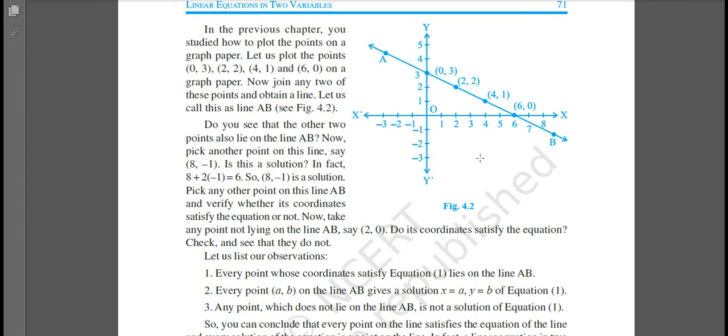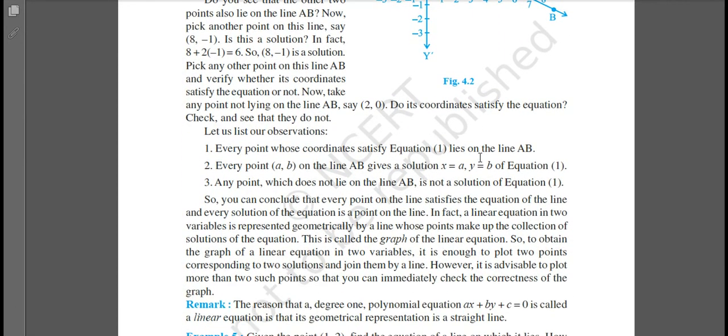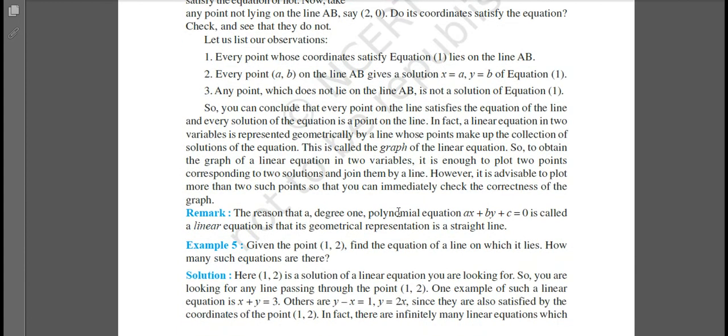So from this we can infer, the reason that a degree one polynomial equation, that is ax plus by plus c is equal to 0 - now ax plus by plus c equal to 0 is the standard form of linear equation in two variables that we discussed earlier - is called a linear equation is that its geometrical representation is a straight line. Always, whenever we graphically represent it, it will come as a straight line.